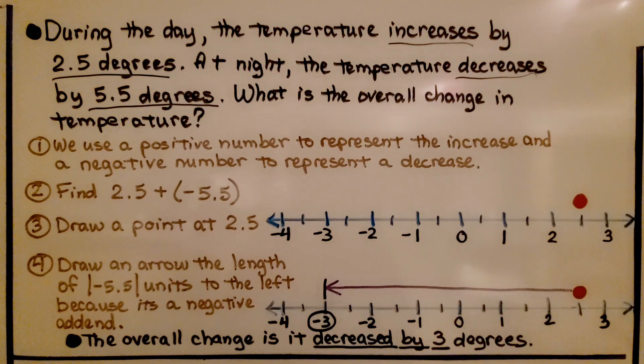Then we draw an arrow the length of the absolute value of negative 5.5 units to the left because it's a negative addend. We draw an arrow the length of 5.5 that brings us to negative 3. The overall change is it decreased by 3 degrees.